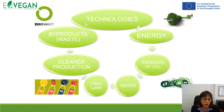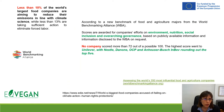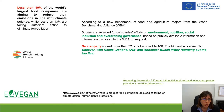The aim is also to produce products with a clean label — validating that a technology produces products that can be labeled as clean — and to achieve zero waste so nothing is wasted, using byproducts and returning energy and mass into the food production chain. Less than 20% of the world's largest food companies are aiming to reduce their emissions in line with climate science. Different scores are awarded for company efforts on environmental, nutritional, societal, and governance dimensions — no company scored more than 72 out of 100, with the highest score going to Unilever and Nestlé.